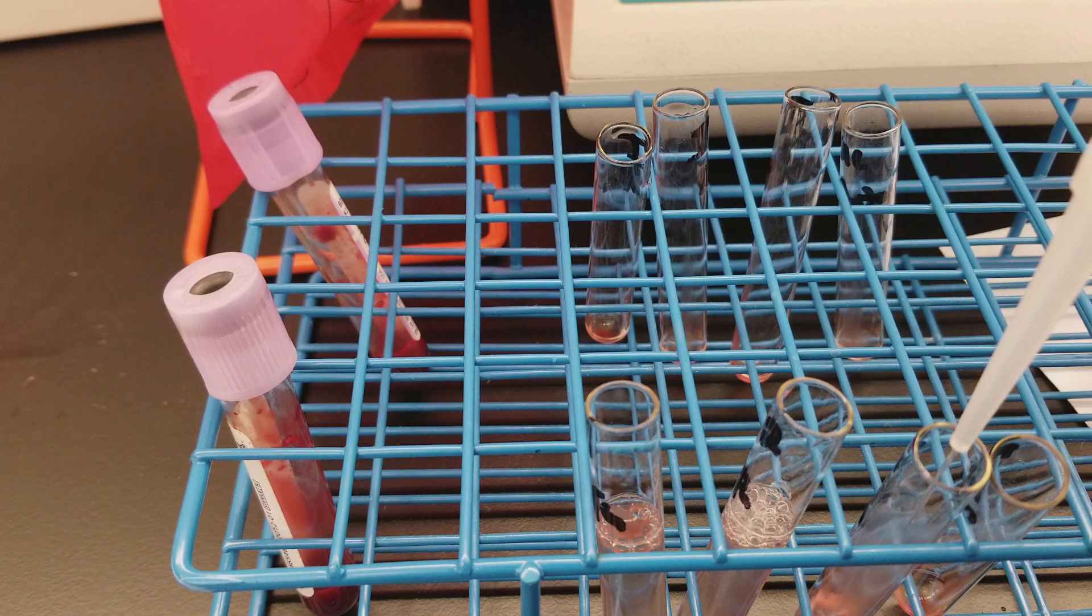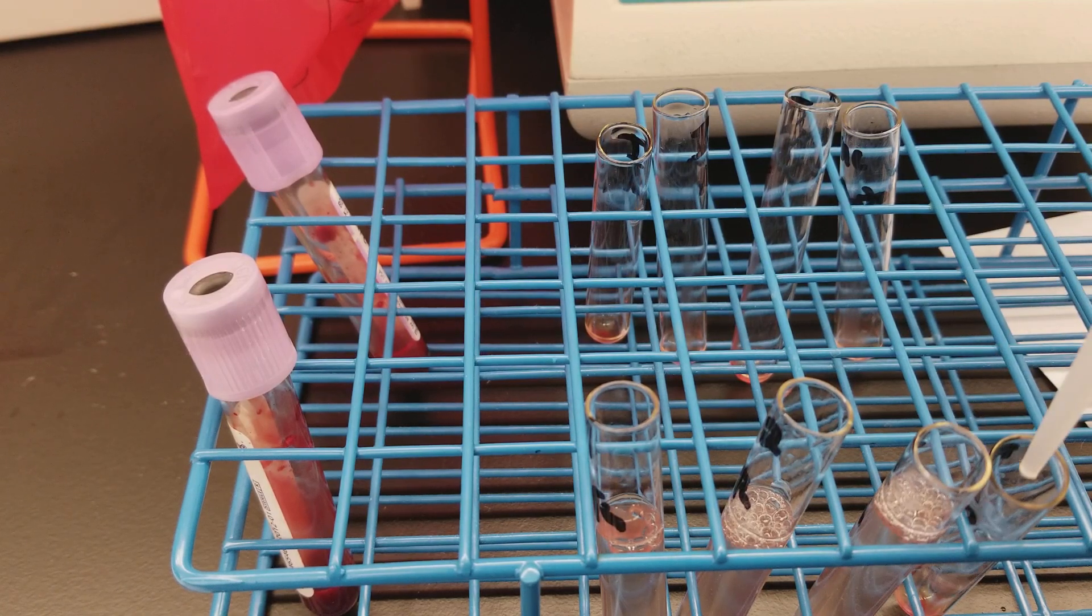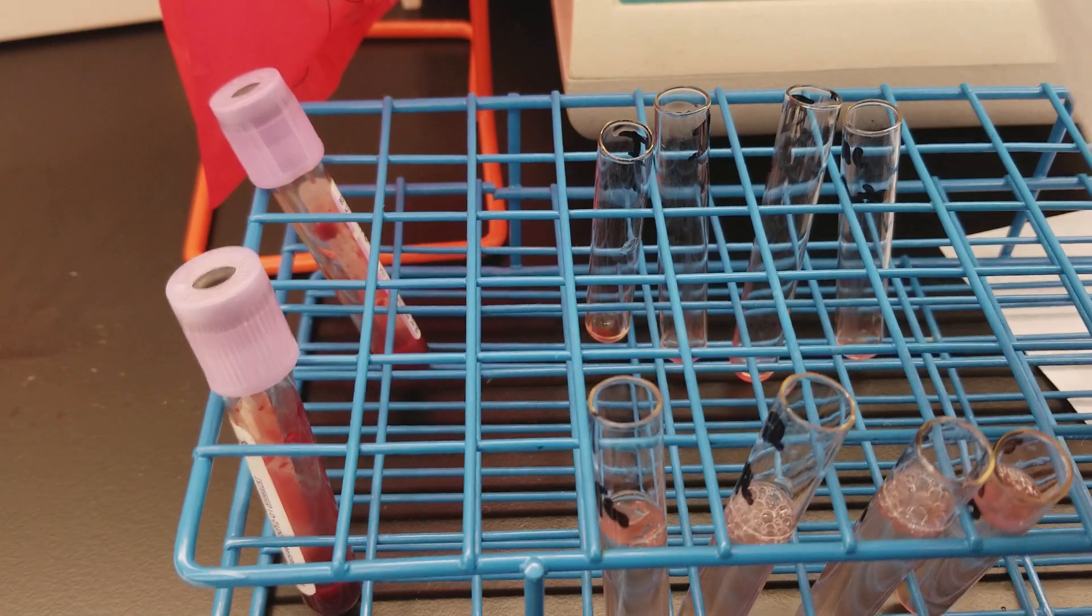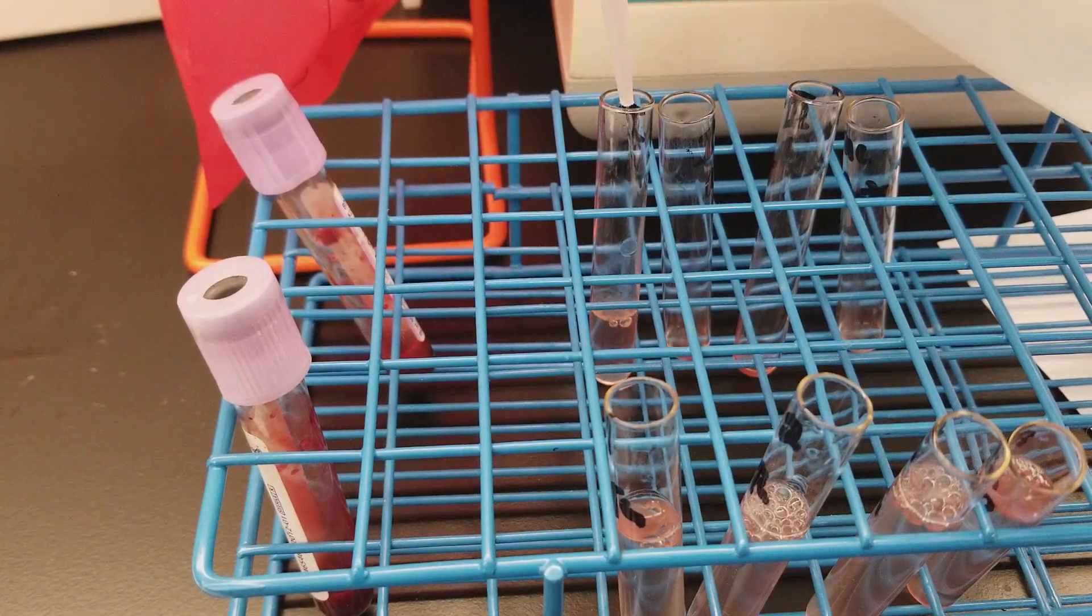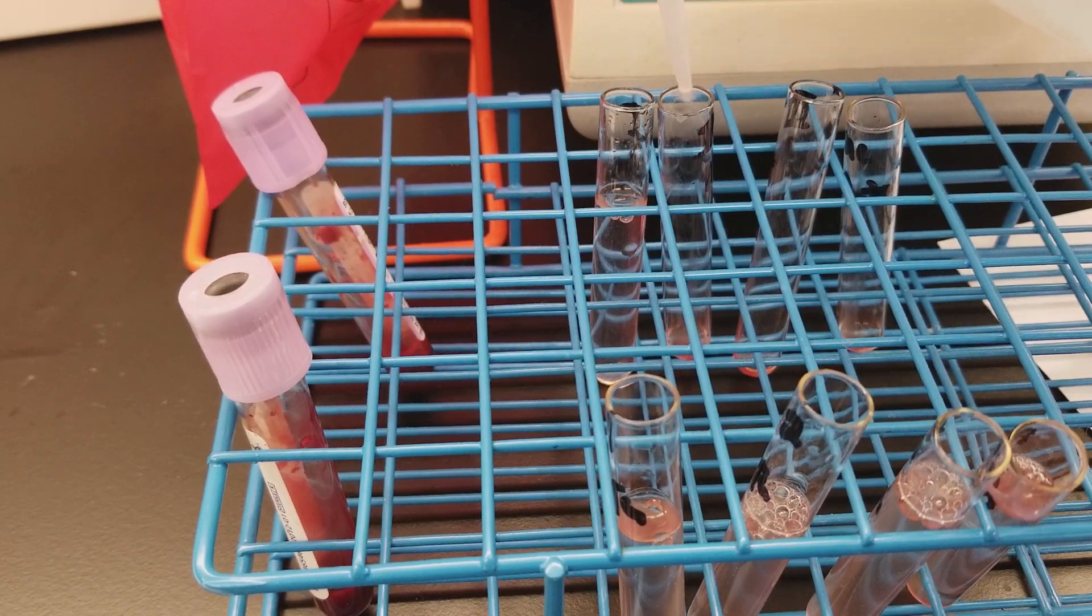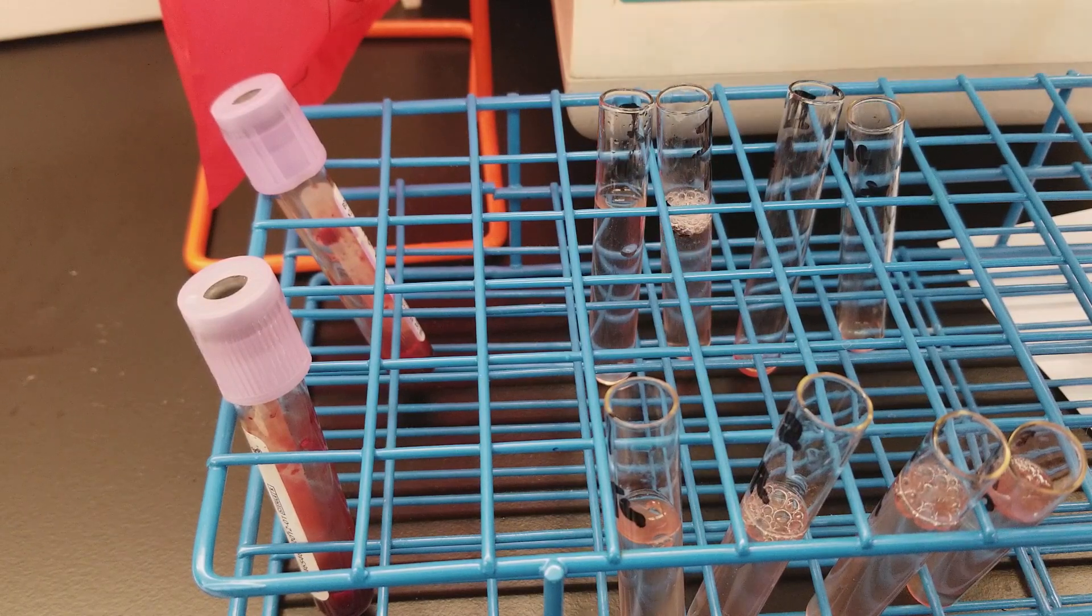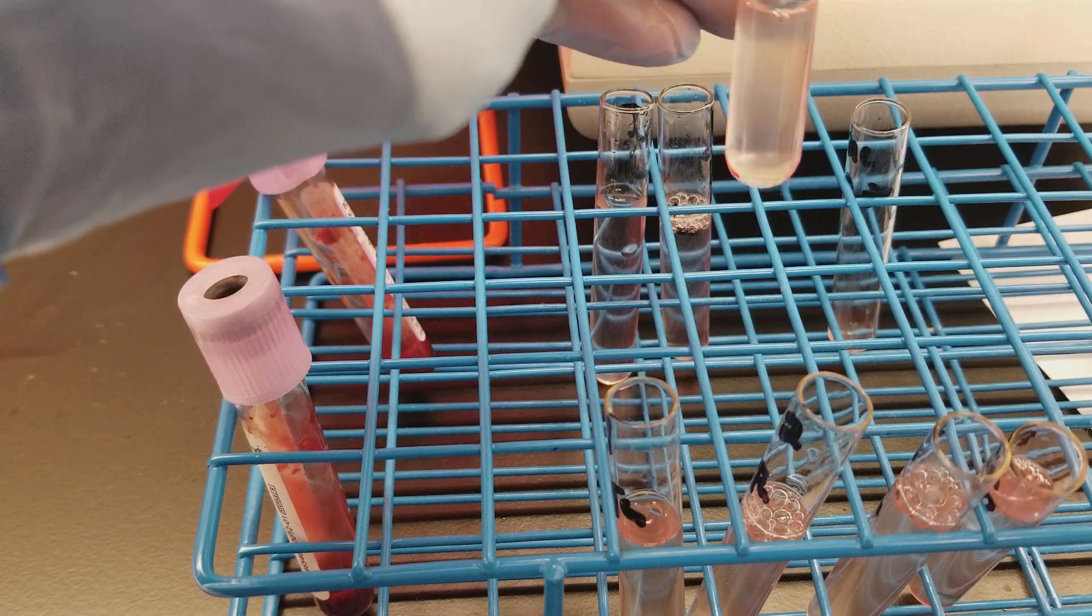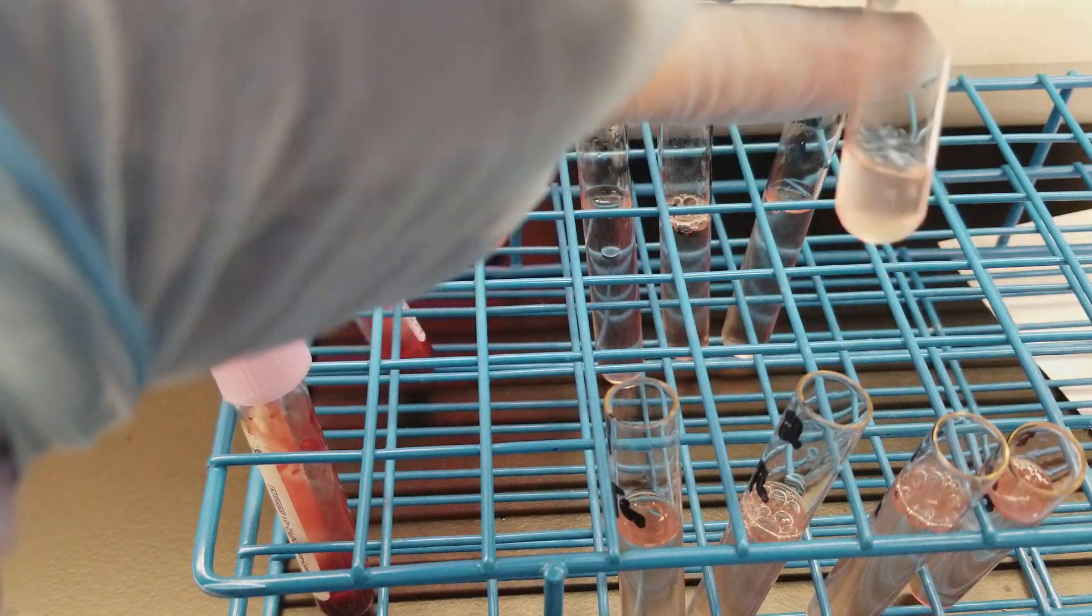So we're adding the saline for the second time, we're washing these cells the second time. What we're trying to do is get rid of any unbound antibodies that may be present in the suspension. So we had just added two drops of LISS and we incubated them at 37 degrees for 30 minutes. LISS is supposed to make it so that the incubation time goes down.